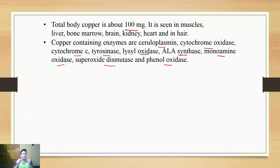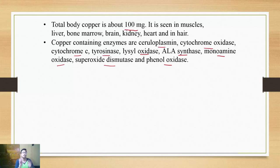If you are smart enough and you have studied porphyria quite well, then you will answer allosynthase. If you are confident about collagen, you will answer lysyl oxidase. If you are confident about heme synthesis and tyrosine metabolism, you will answer tyrosinase. This is a very good area to lure the examiner into your own area of confidence.